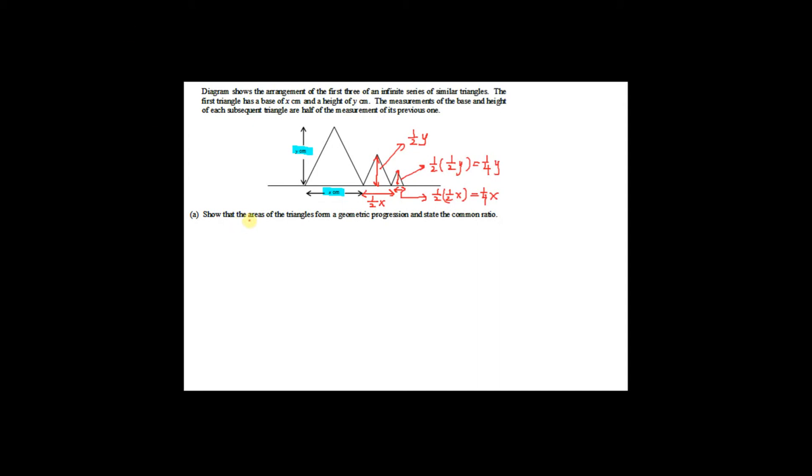Part A: Show that the areas of the triangles form a geometric progression and state the common ratio. To prove this, first list out the first three terms — the first term, the second term, and the third term.